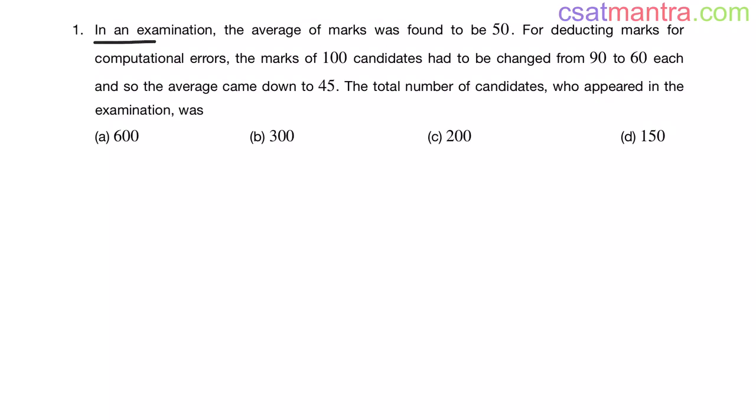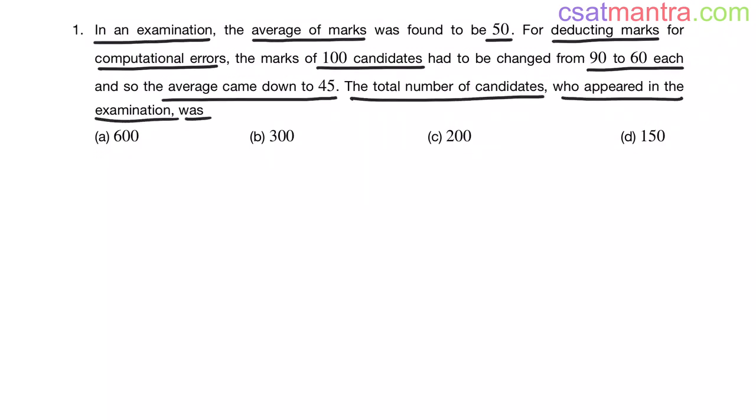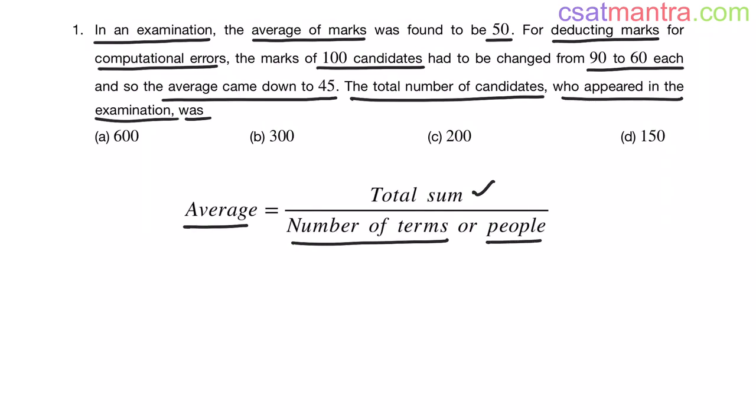In an examination, the average of marks was found to be 50. For deducting marks for computational errors, the marks of 100 candidates had to be changed from 90 to 60 each, and so the average came down to 45. The total number of candidates who appeared in the examination was? We know average equals total sum by number of terms or number of people.